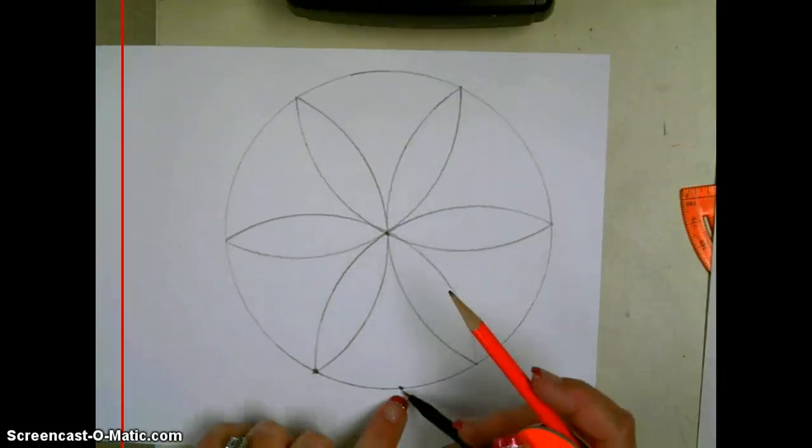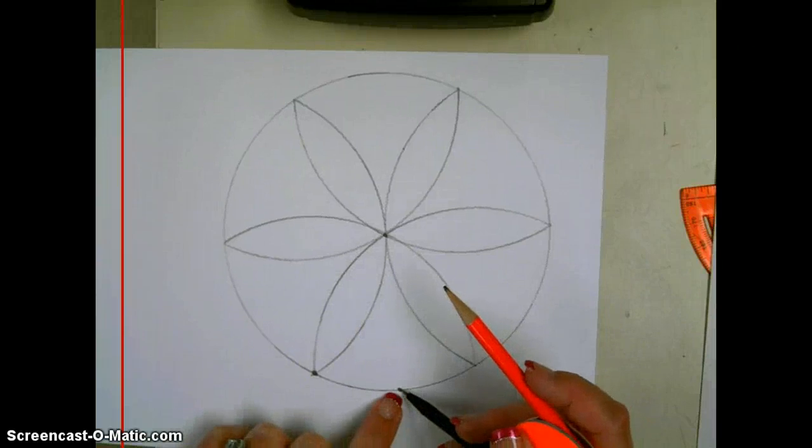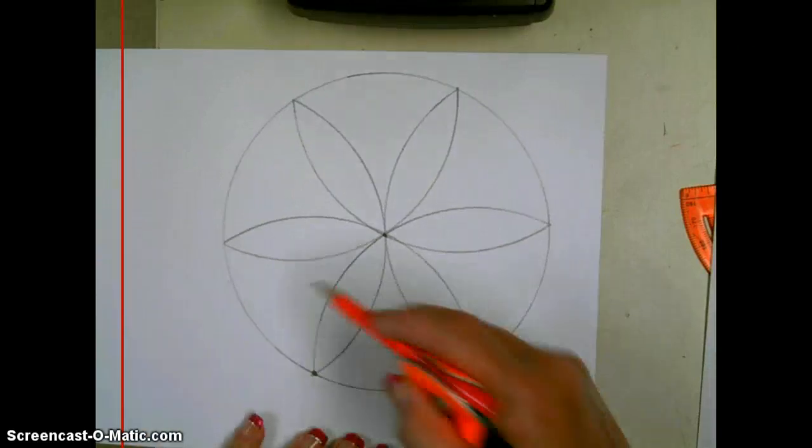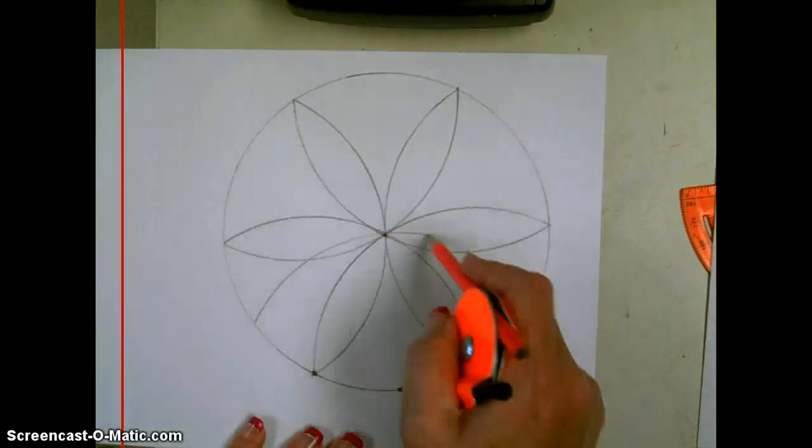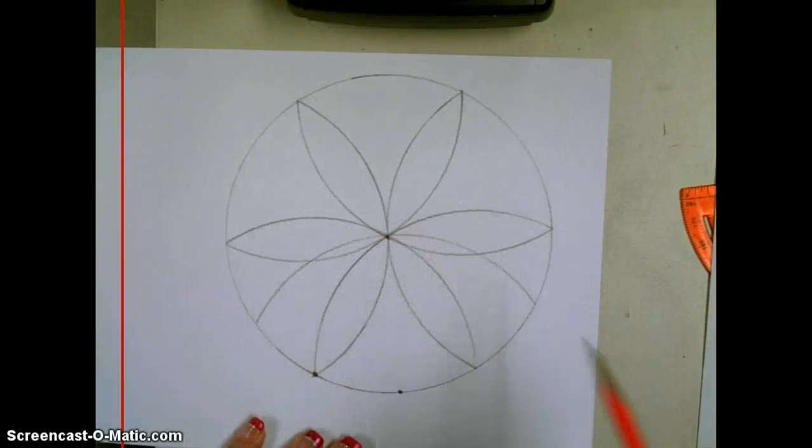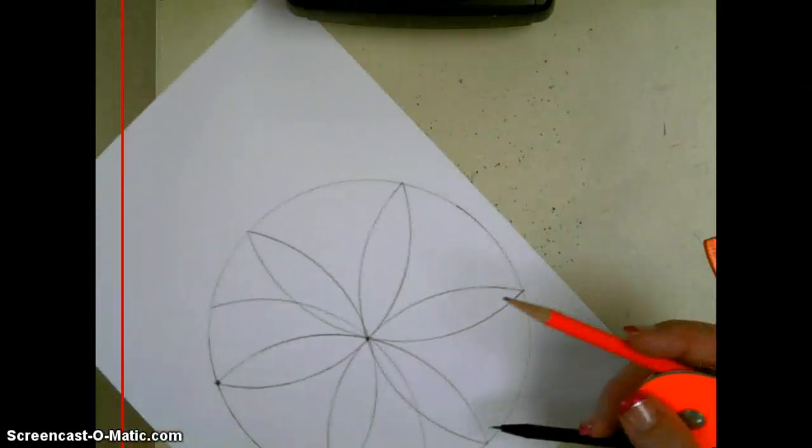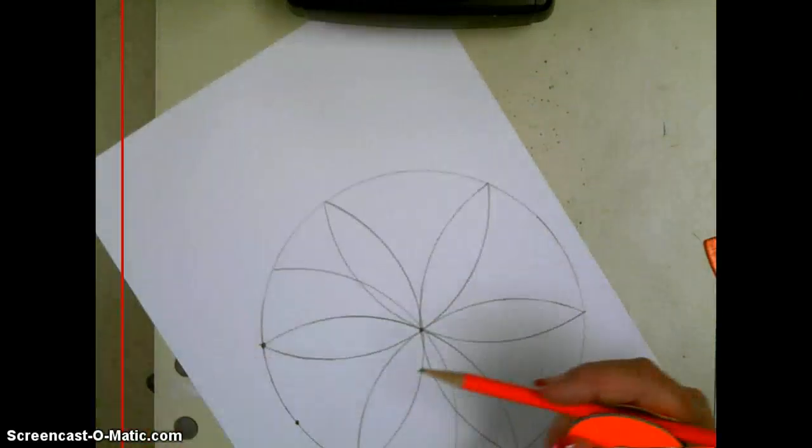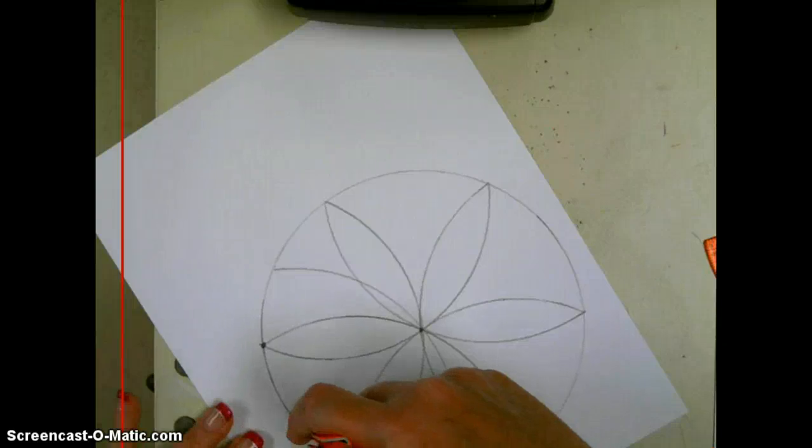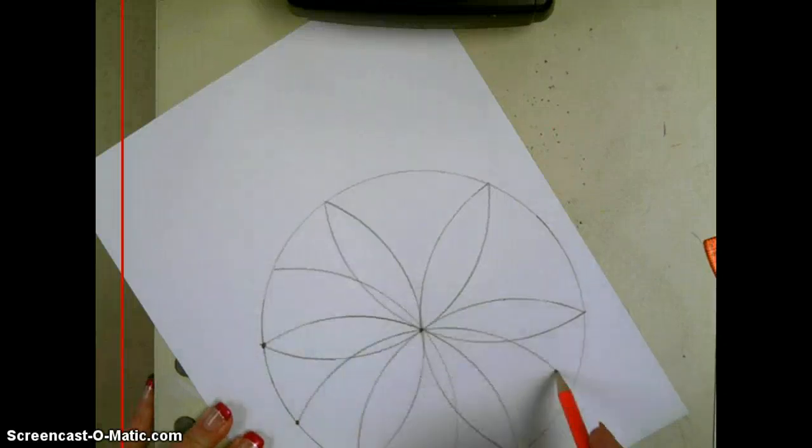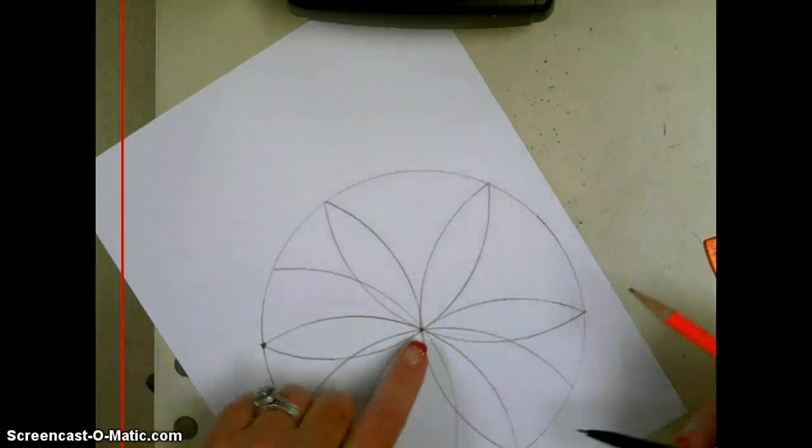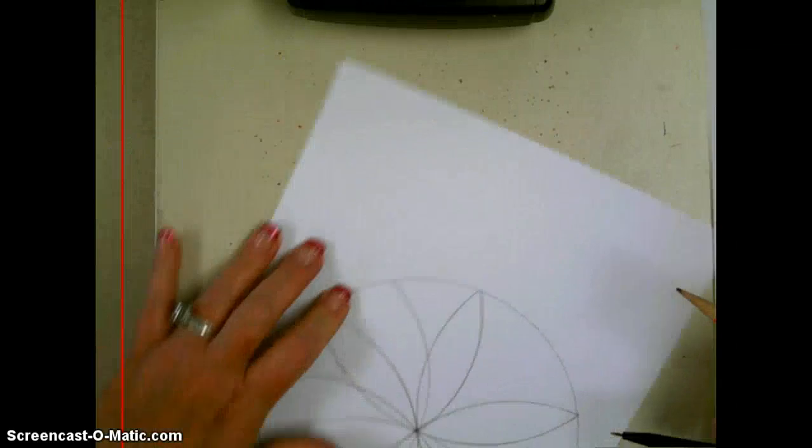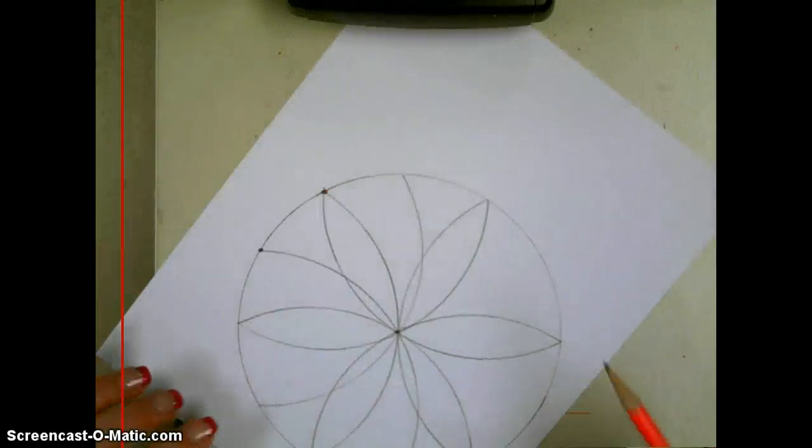I'll start with the point of my compass on this new point between the two petals and begin with an arc. I'm going to keep going to each new point that the arc created and create a new arc. Notice each arc is always going through the center of the circle. That is because I never changed my radius.